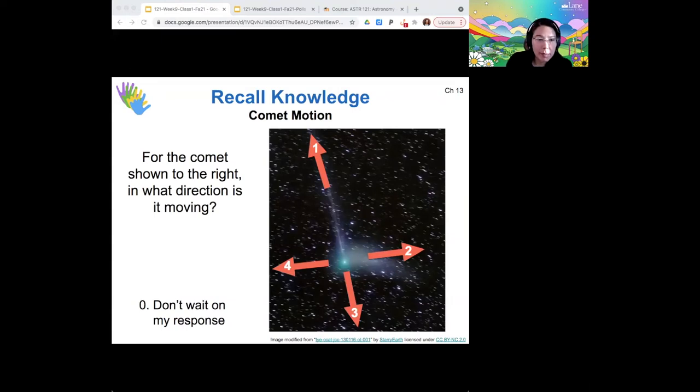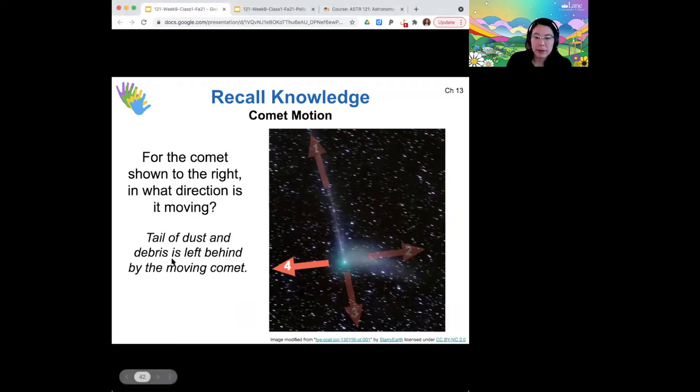Good guesses so far. Both three and four seem reasonable. It turns out that four is the direction. It's leaving behind the debris and dust tail as it moves to the left.